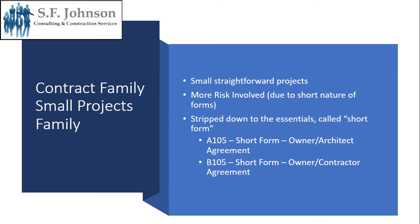Another family of documents is for small projects. Just like any detailed set of plans, the more detailed the set, the more information you have. For small projects, these are bare-bone contracts — small, straightforward contracts for small, straightforward projects. They involve more risk because there's less wording and less detail, stripped down to the essentials. There are two forms called the short form: A105 is the short form for the owner-architect agreement, and B105 is the short form for the owner-contractor agreement. Those make up the small family.